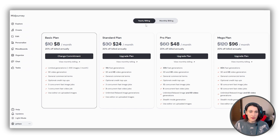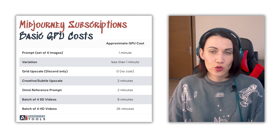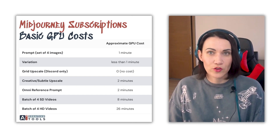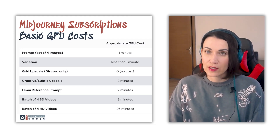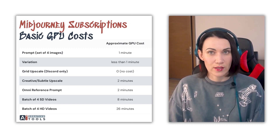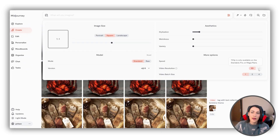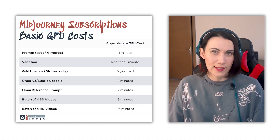The key thing to understand is GPU time. Each plan includes a specific number of GPU hours. Processing one standard image prompt — a grid of four images — usually takes about one minute of GPU time. SD video batch size 4 takes about 8 minutes, and HD video batch size 4 takes about 26 minutes. You can switch between SD and HD video modes as well as the batch sizes right here in the Create section Prompt Settings. Other tasks may use more or less time.